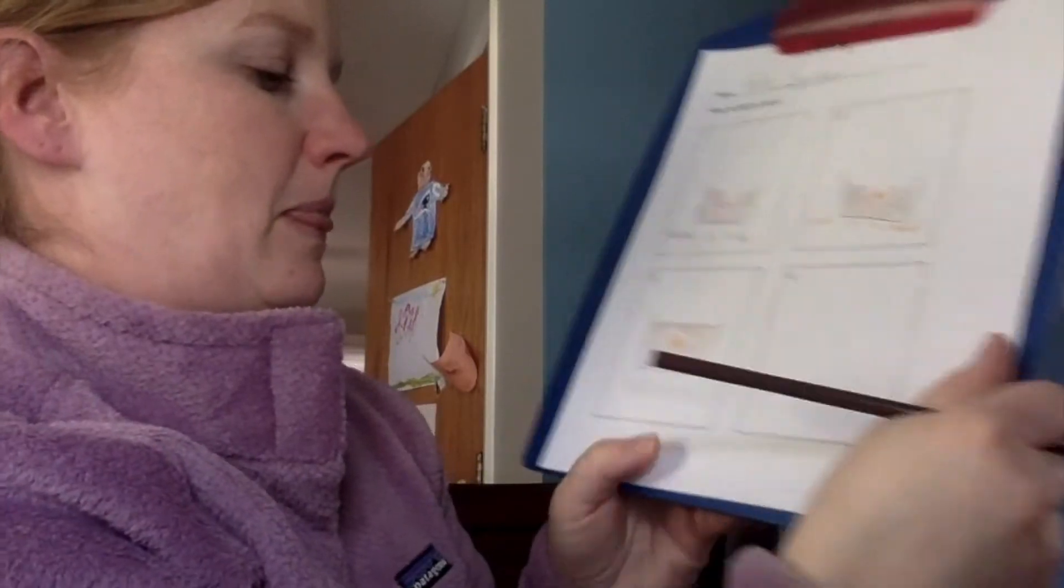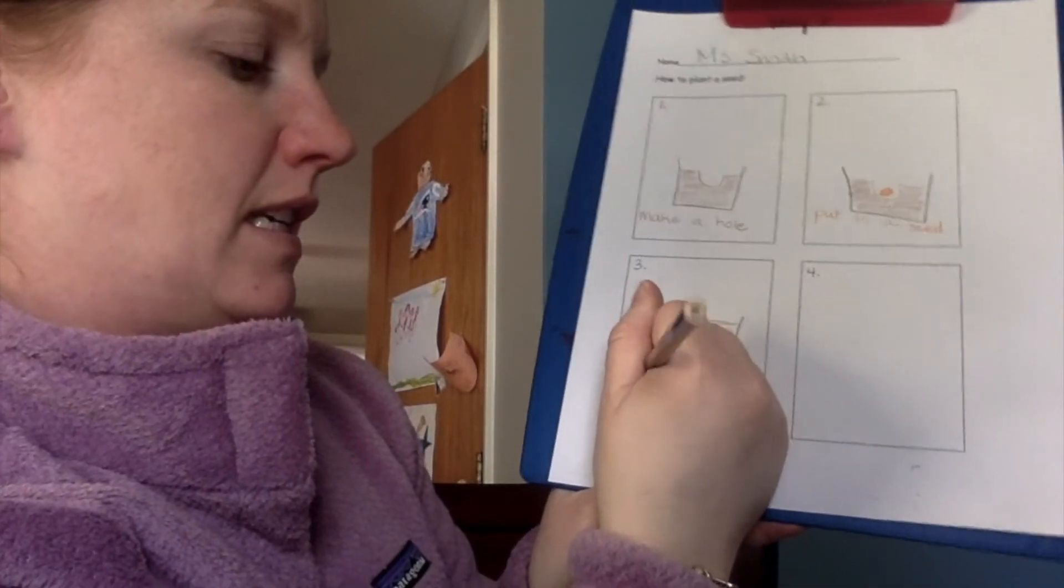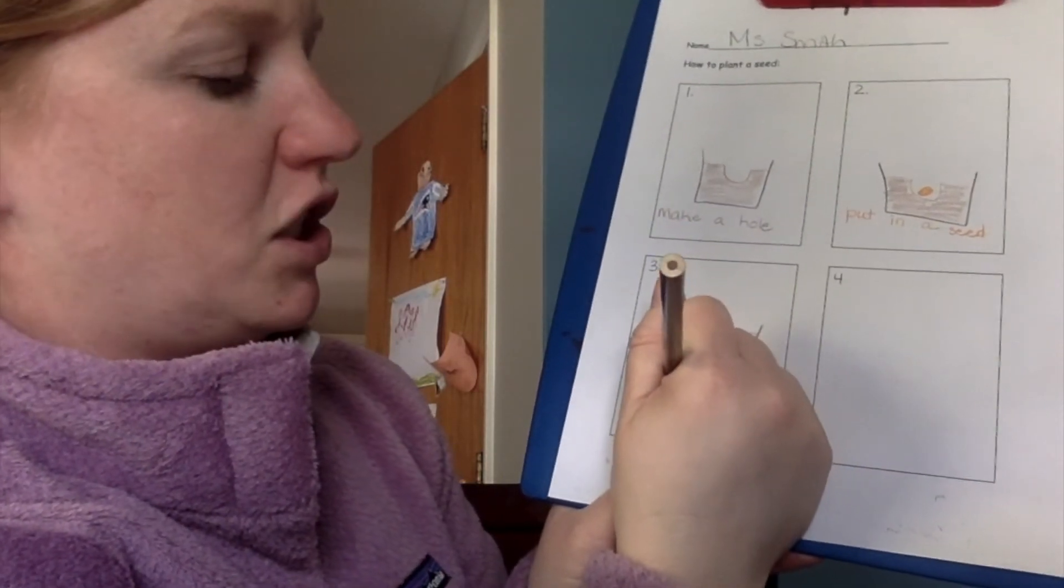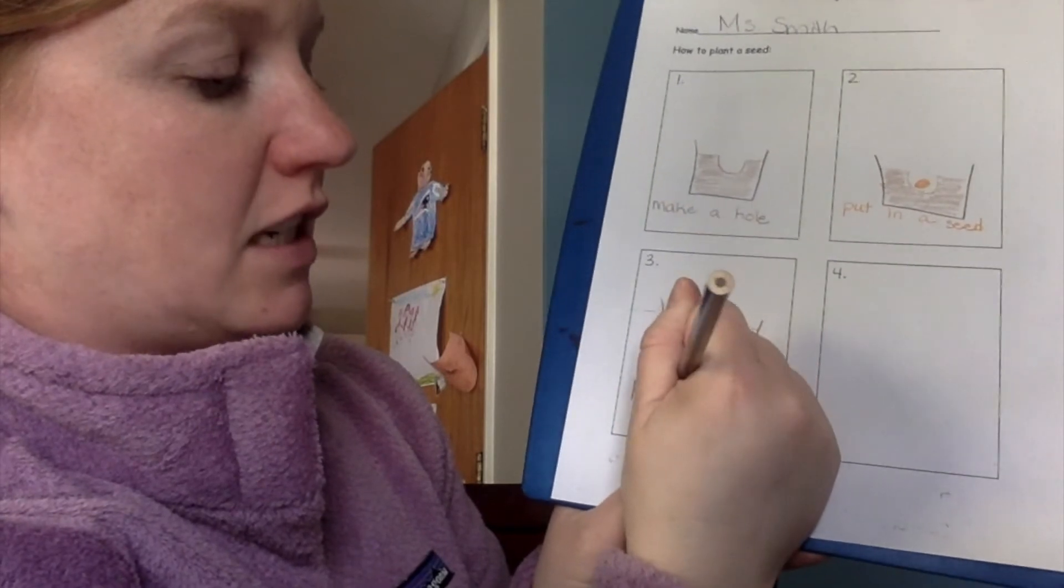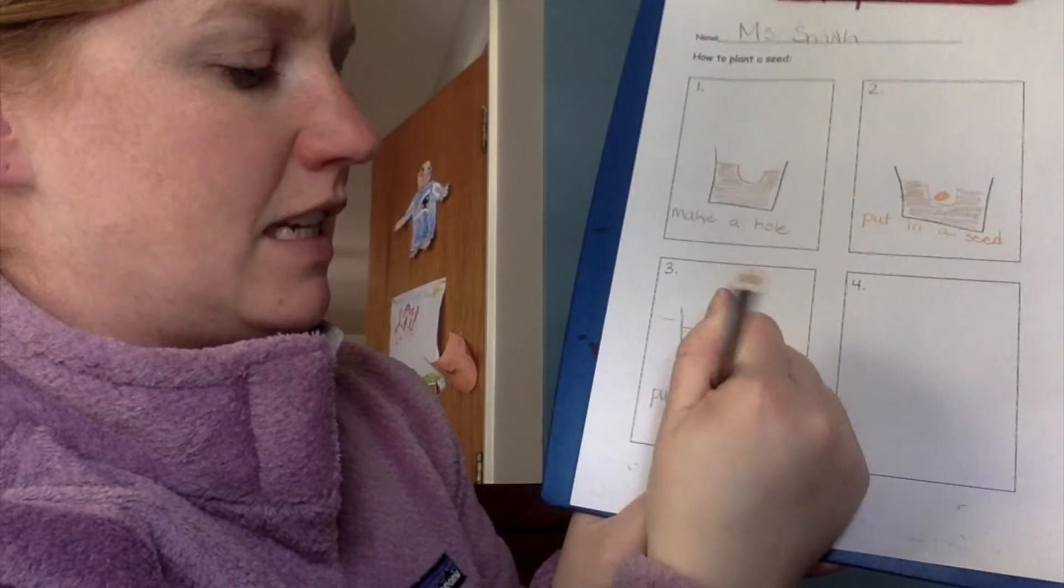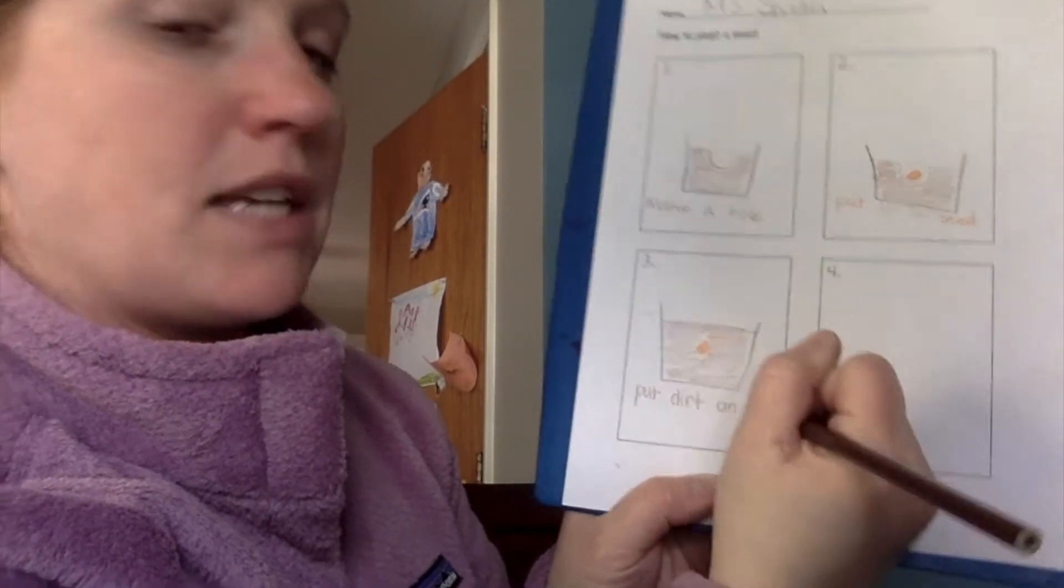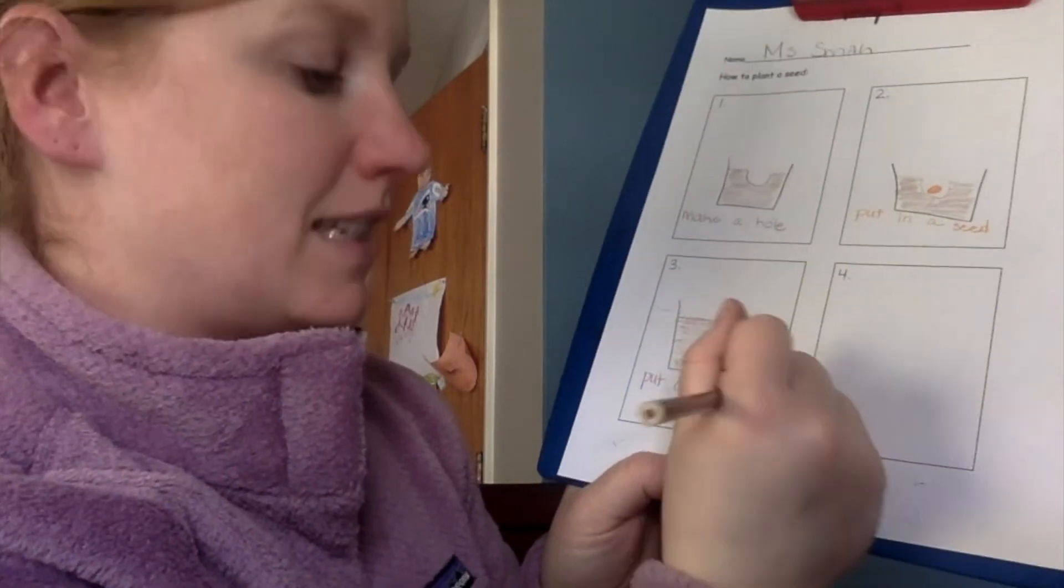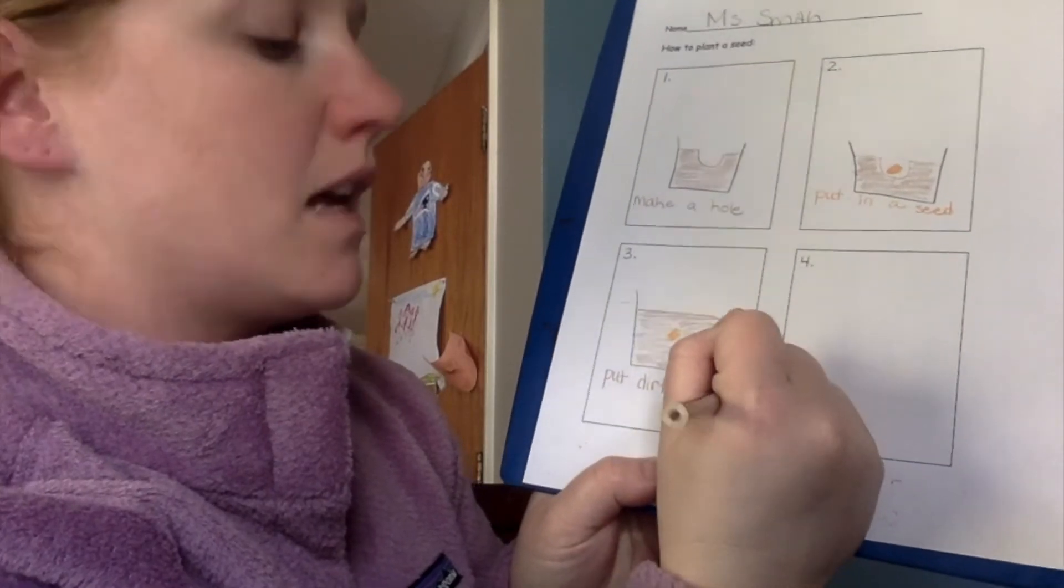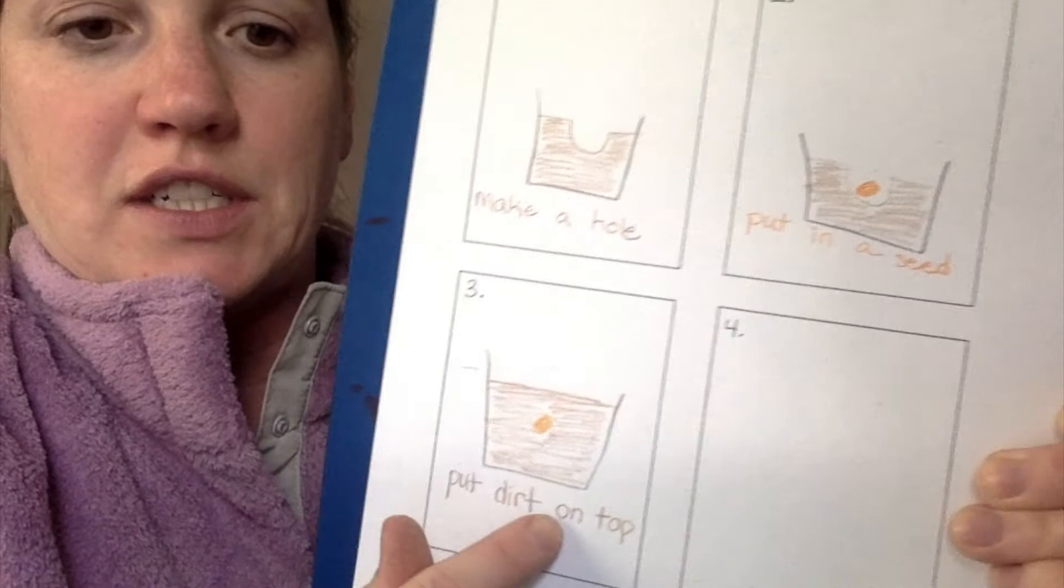So I'm going to write put. P. T. Dirt. Or soil. I'm going to write dirt because it's a little bit easier. D. It's actually I. R. T. Put dirt on top. T. O. P. Put dirt on top.